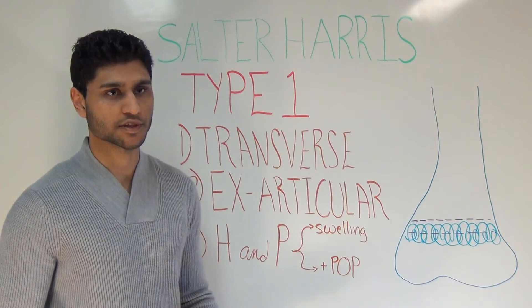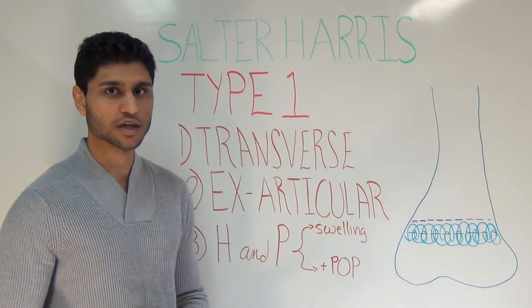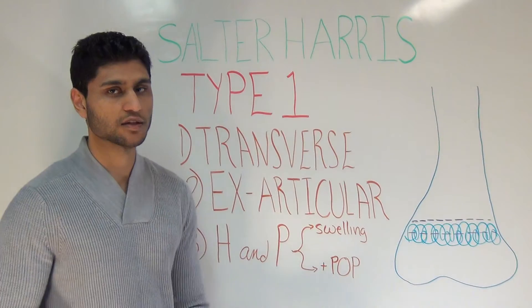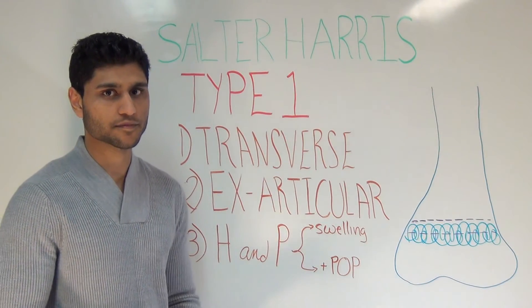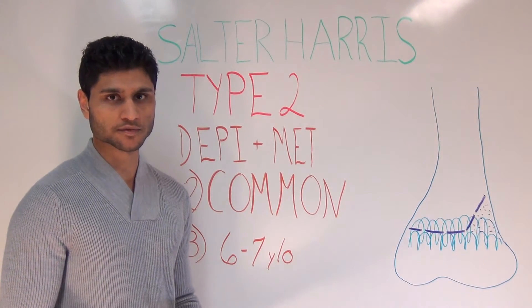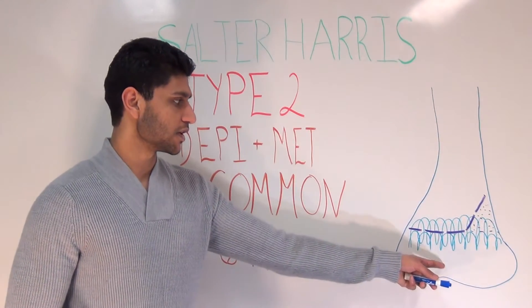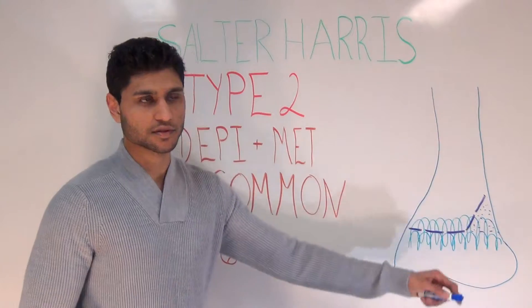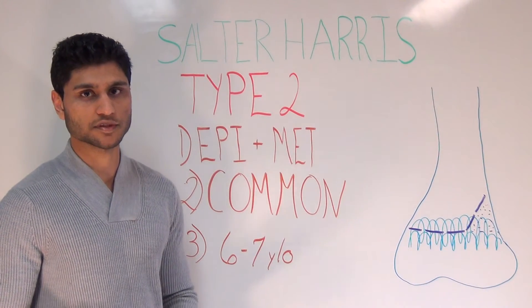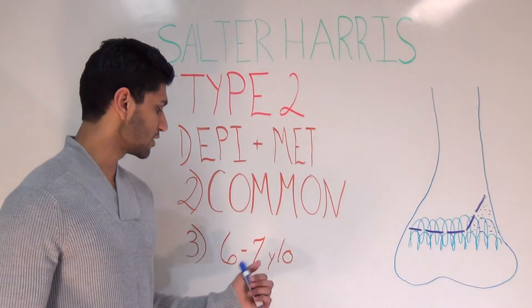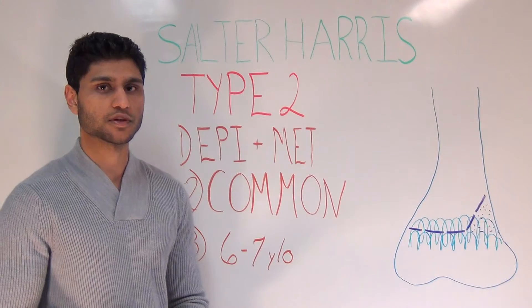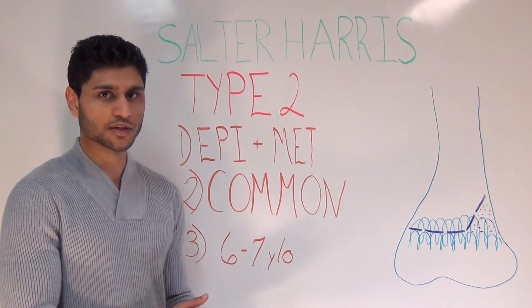Type 1 fractures are very difficult to see on x-ray, so you have to rely on your history and physical. You look for swelling in that area, positive pain on palpation, and of course a history of trauma. In a type 2 fracture, the entire epiphysis and a portion of the metaphysis is broken off. There is no injury to the epiphysis, and the metaphyseal fragment is called the Thurston-Holland sign. Type 2 is the most common Salter-Harris fracture, and tends to occur in children around 6 to 7 years old, whereas type 1 tends to occur in younger children, around 2 to 5 years old.